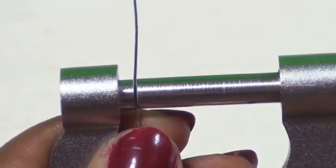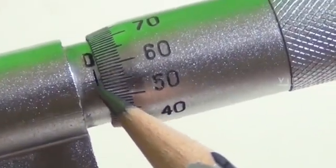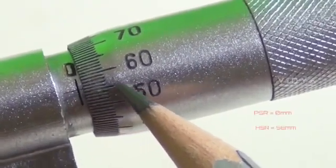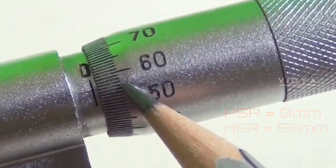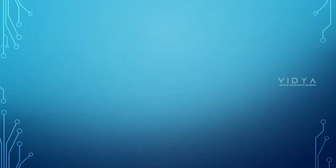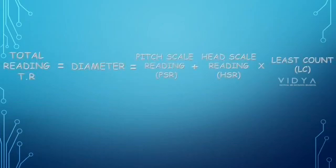Place the wire in the screw gauge tip, then tighten the ratchet, then note down pitch scale reading PSR and head scale reading HSR. And total reading TR is equal to pitch scale reading plus head scale reading into least count.